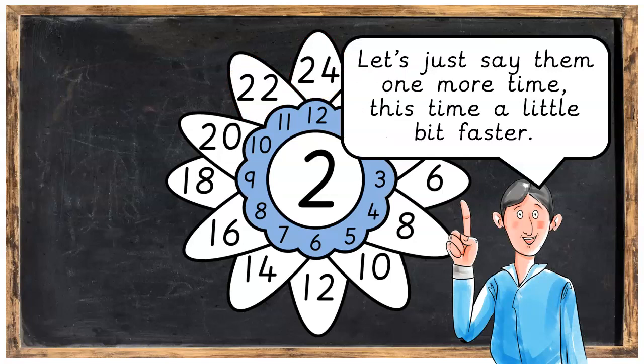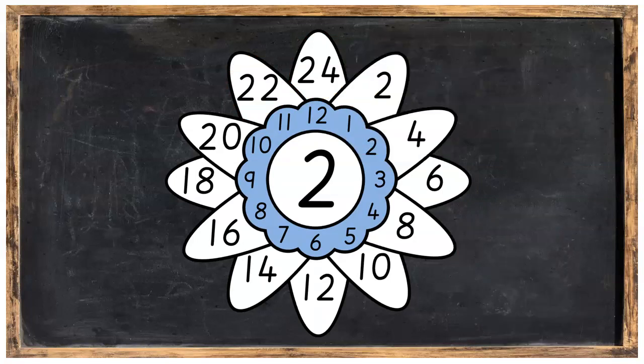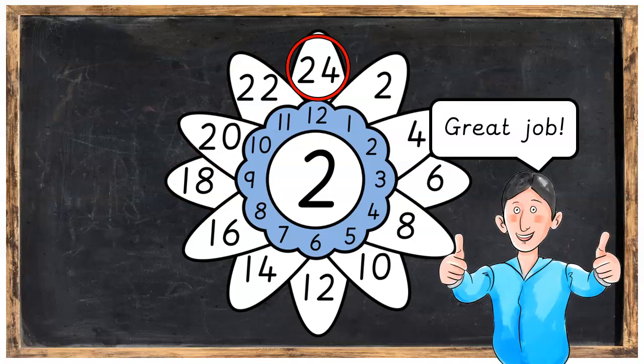Let's just say them one more time, this time a little bit faster. So we've got 2, 4, 6, 8, 10, 12, 14, 16, 18, 20, 22, 24. Great job.